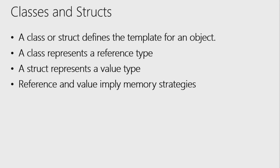So constructing complex types: we have two foundational ways of constructing a complex type — a class and a struct. They're not the same thing, that's why they're two separate words. A class or struct defines the template for an object. The difference between an interface and classes and structs is that classes and structs actually implement behavior, whereas an interface just promises that that behavior will be implemented.